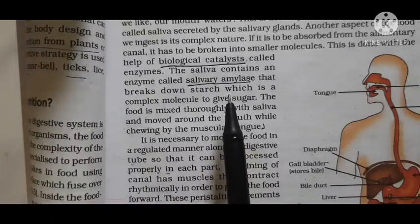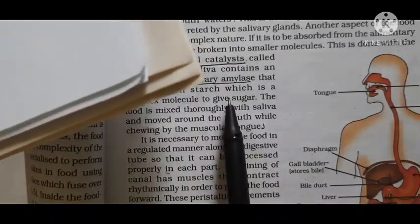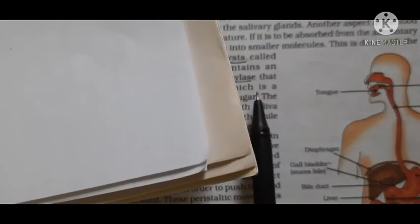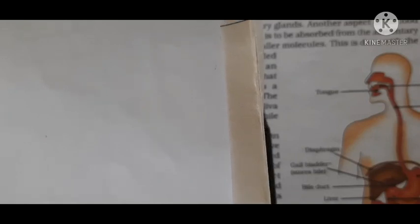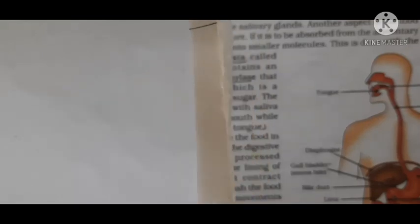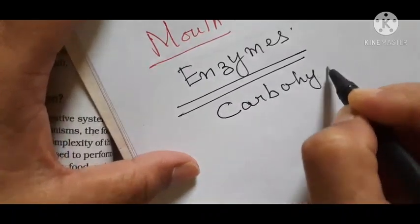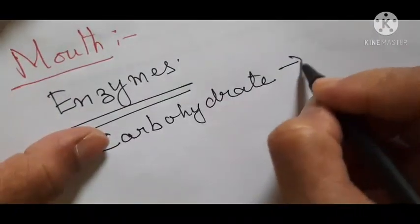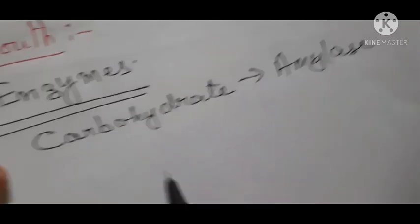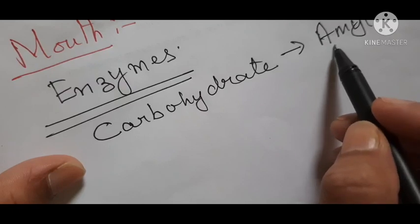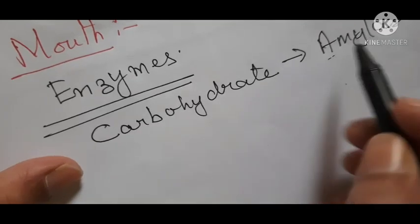These enzymes help in the nutrient breakdown of food. Different types of nutrients like carbohydrates, proteins, and fats are broken down by different enzymes. Carbohydrates such as starch are broken down by an enzyme called amylase. Carbohydrates are converted or digested with the help of the enzyme called amylase.